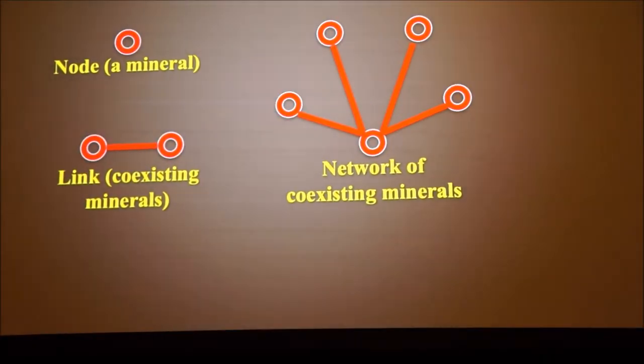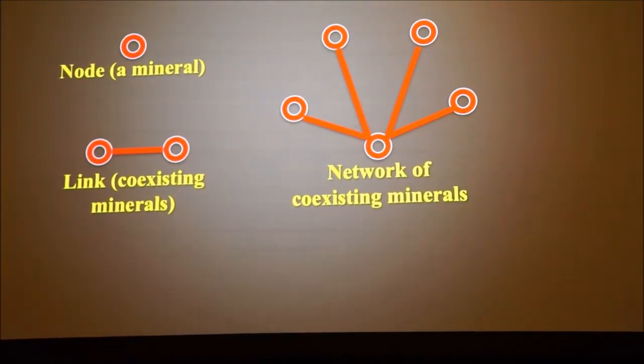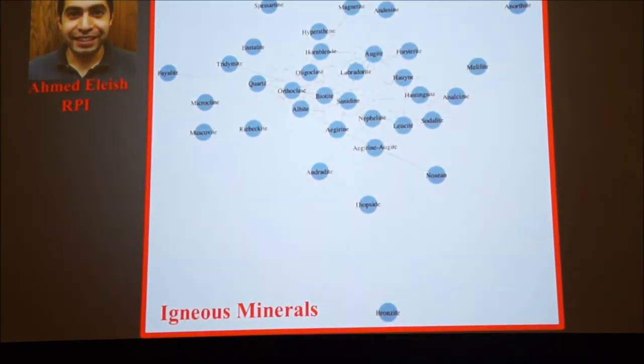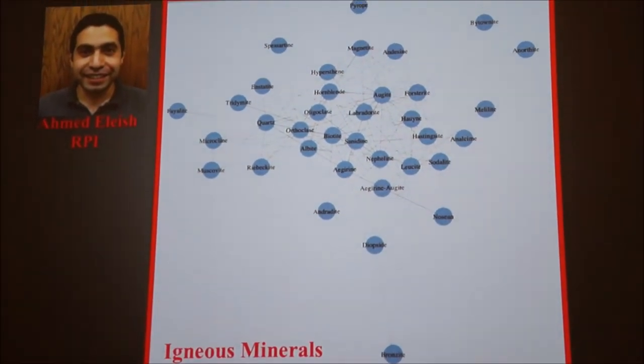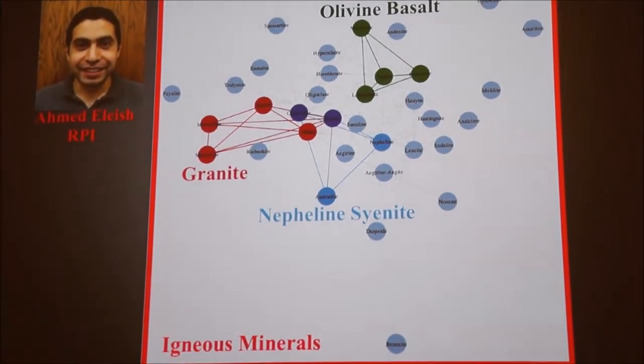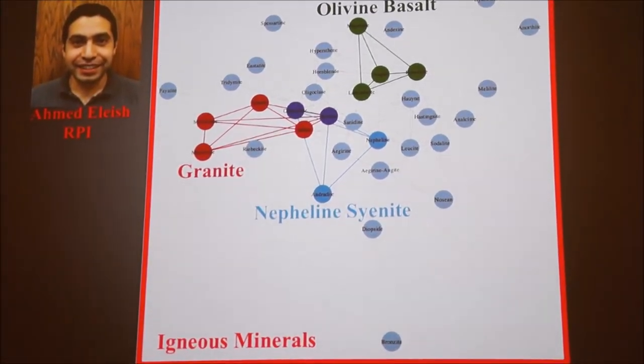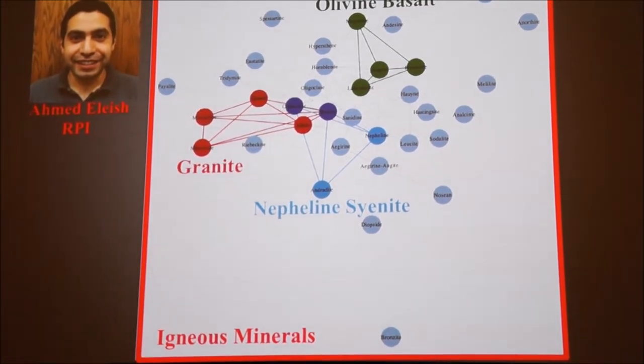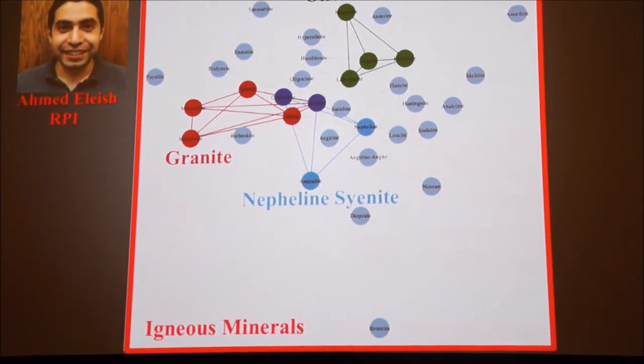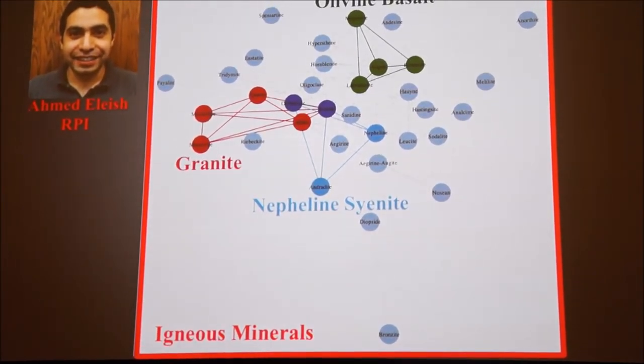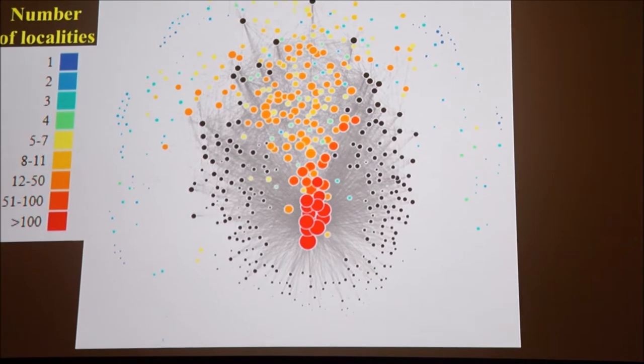So now let's look at mineral networks. The same principle. Each node represents a mineral species. If two minerals coexist, there's a link between them. You can make a network of minerals. Here's a very simple network just of the major rock-forming minerals of igneous rocks. And so, embedded in this network, there is granite, there's nepheline syenite, olivine basalt. Indeed, all of igneous petrology is embedded in this diagram. You're seeing it in two dimensions, but there are about 36 different nodes here. So, this is 35-dimensional space that's being projected down just in two dimensions here. There's a vast amount of information on phase relations and other very important information.